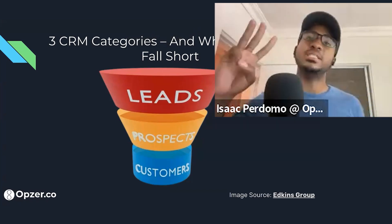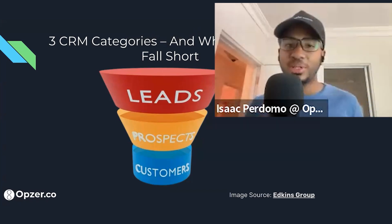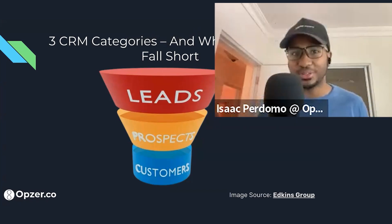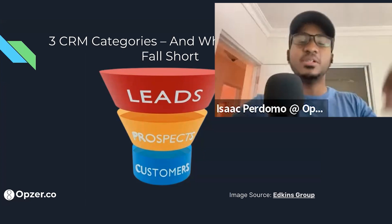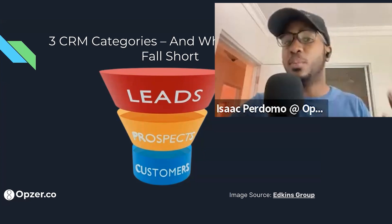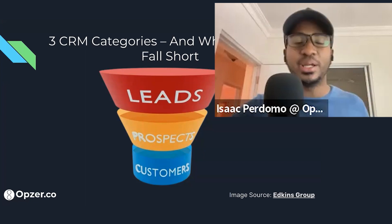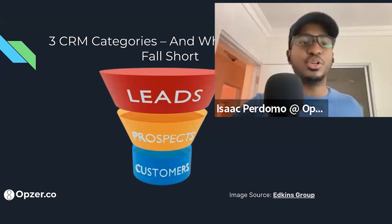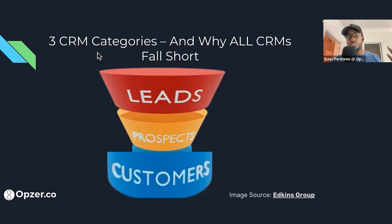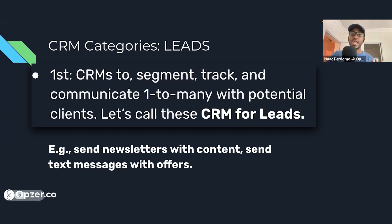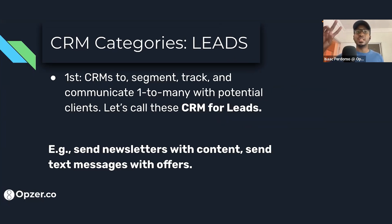We're going to talk about three CRM categories and why all of them fall short. This relates specifically to accounting firm owners and their process of picking a CRM. I like to group CRMs into three categories: leads, prospects, and clients or customers. The first is CRMs that we use to segment, track, and communicate one-to-many with potential clients — let's just call these leads.